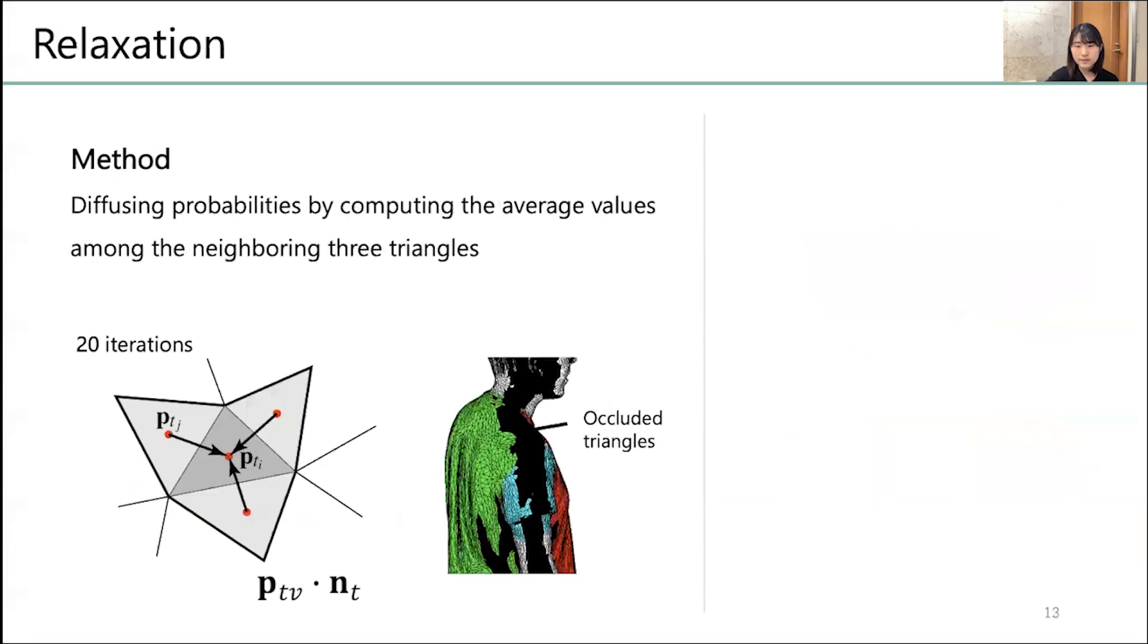The second step is relaxation. This process is necessary to improve the pattern estimation accuracy because in occluded areas, the pattern cannot be predicted adequately. In this step, we diffuse probabilities by computing the weighted average values among the original triangle and its three neighboring triangles.